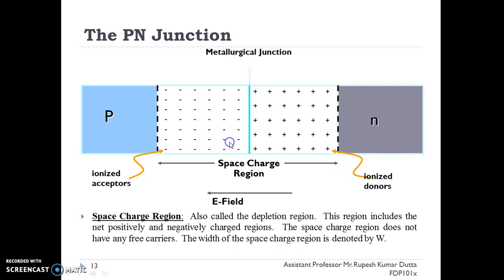Here these are the negative ions and these are the positive ions, and this is known as the space charge region or depletion region. This includes the negatively and positively charged ions. Due to these ions we have an electric field here, and due to that electric field, this electric field will oppose the flow of electrons further into the p-side and holes to the n-side.